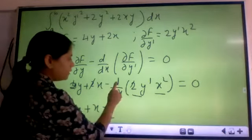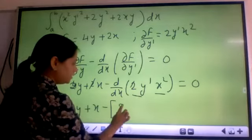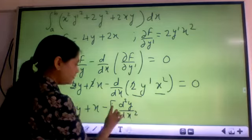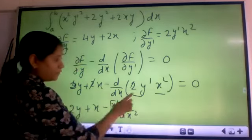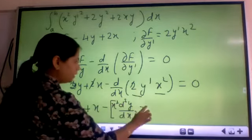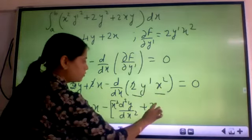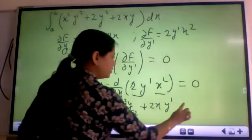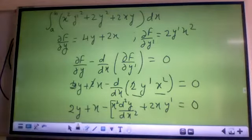If you apply the product rule, d/dx of y' is d²y/dx². Into x². Differentiation of this into this, plus differentiation of x² is 2x. And y' is equal to 0. Correct?